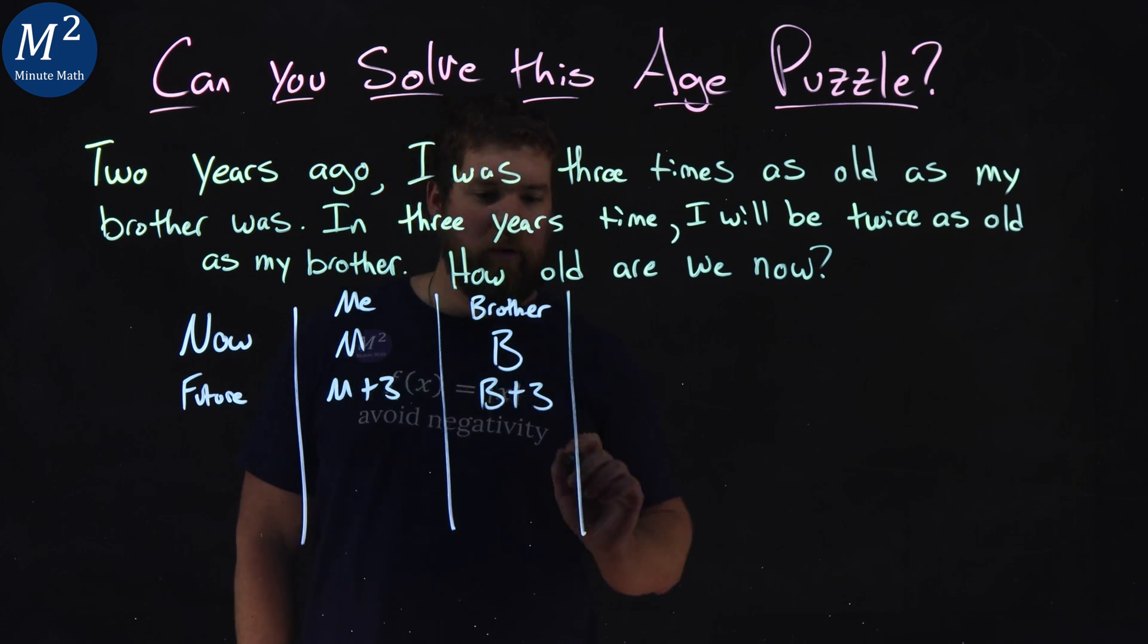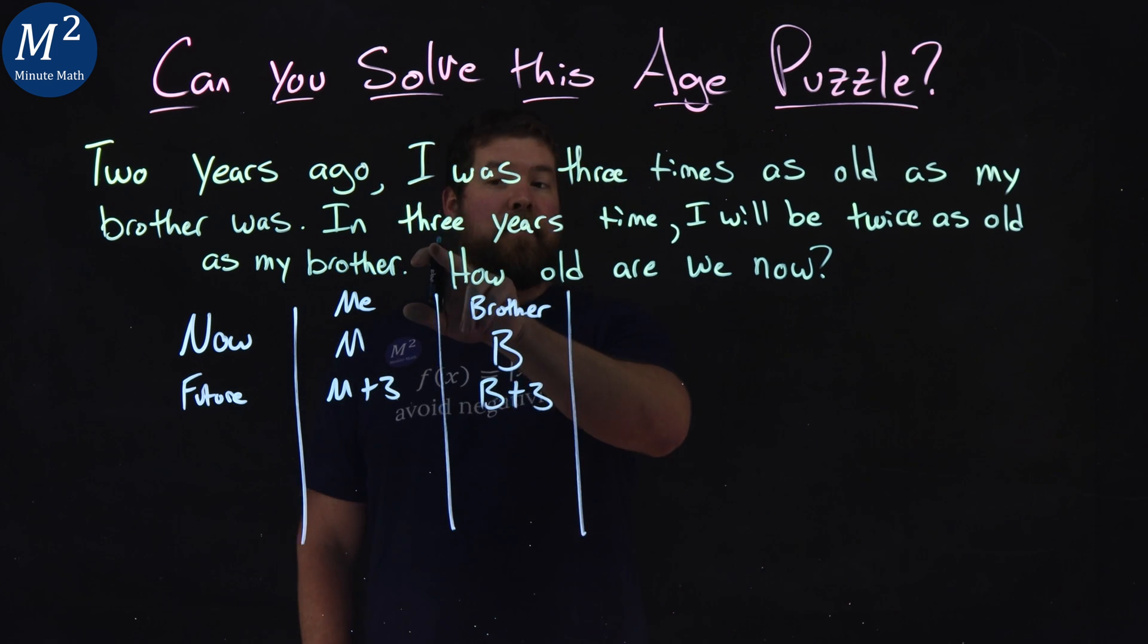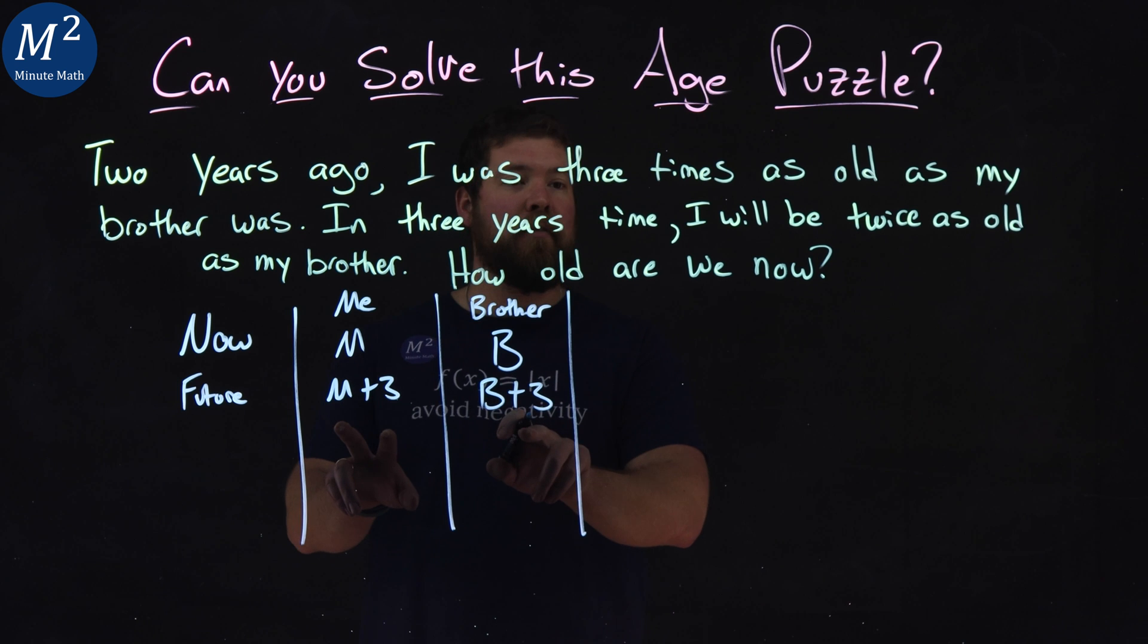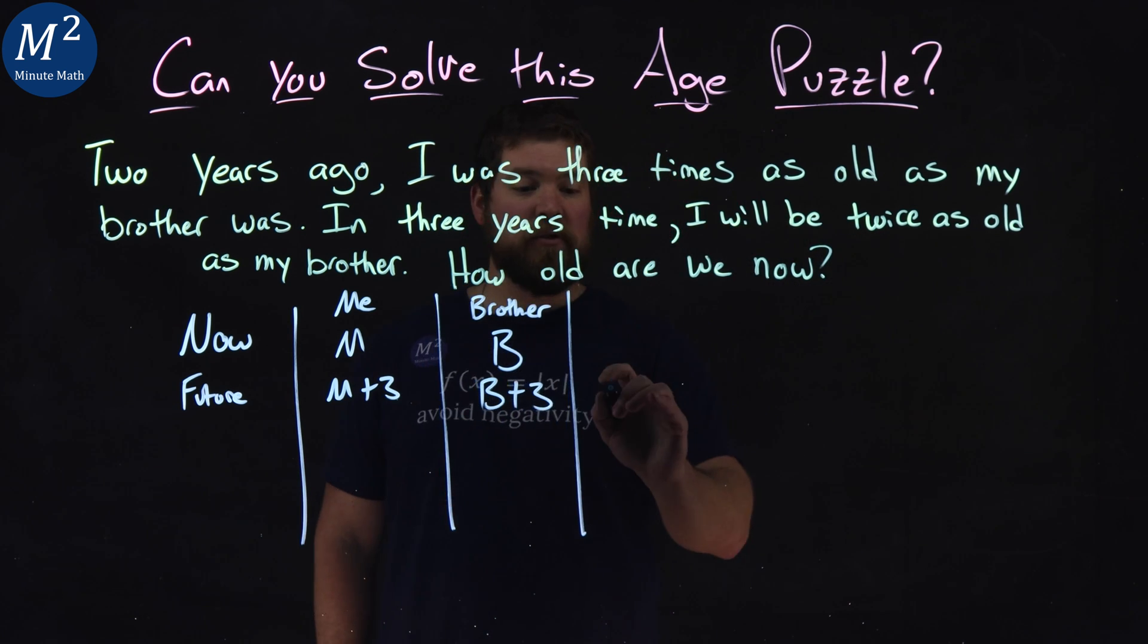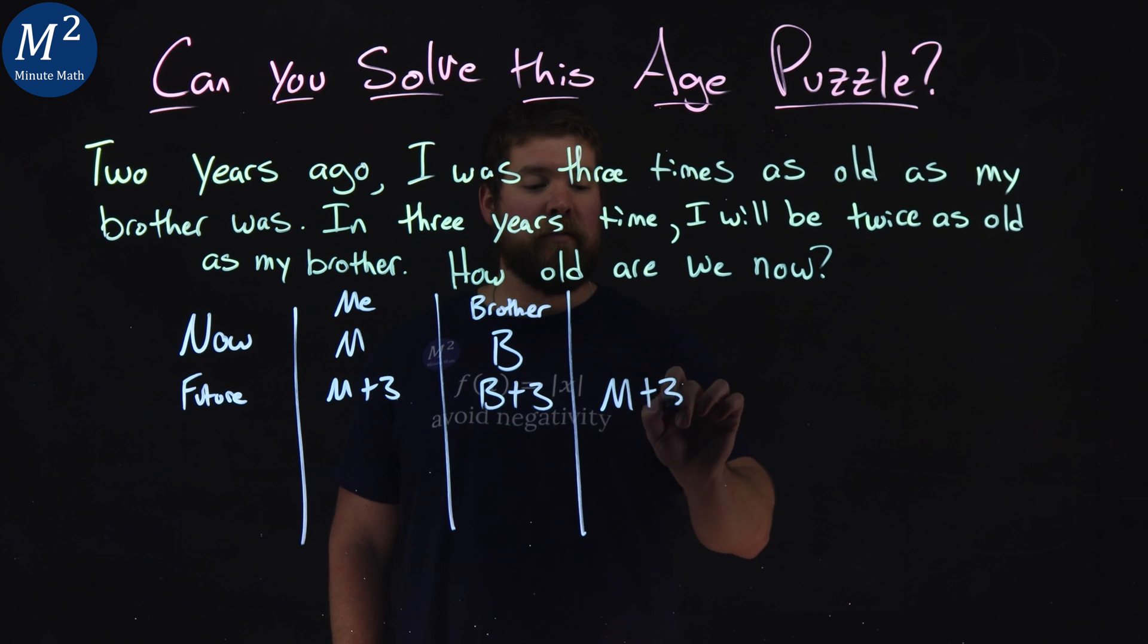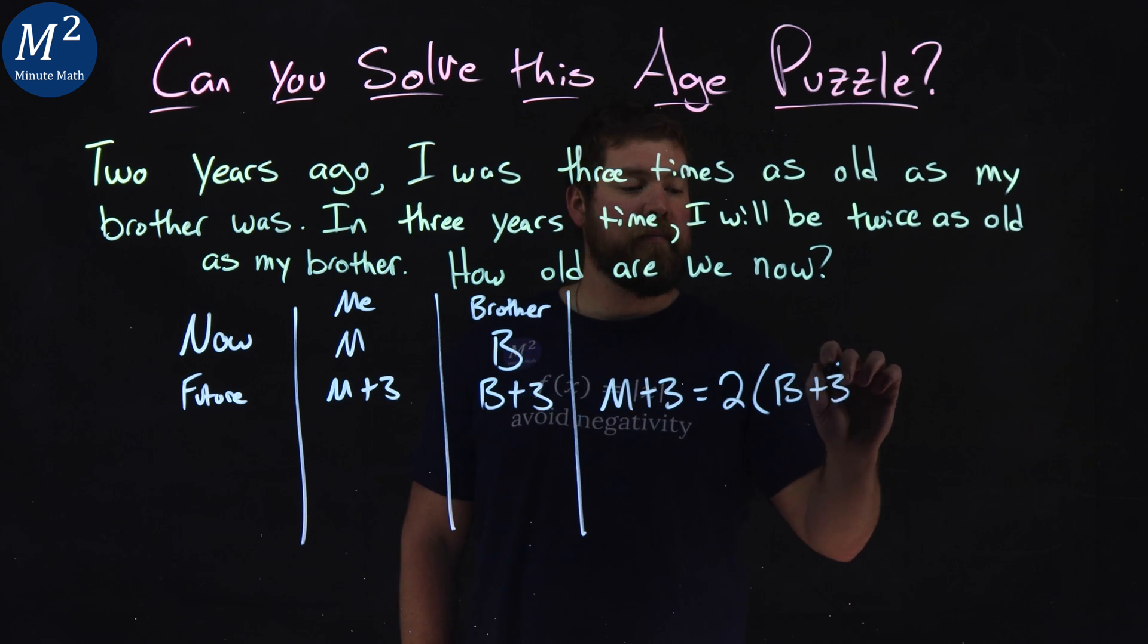But we don't know what that is going to equal. They tell us again, three years time, I will be twice as old as my brother. So my age, M plus three, will be two times the age of my brother, B plus three.